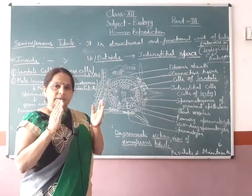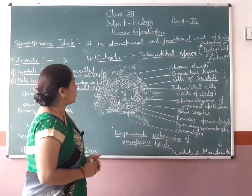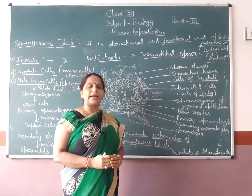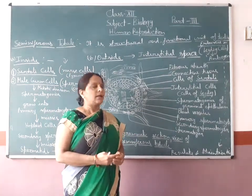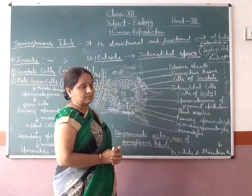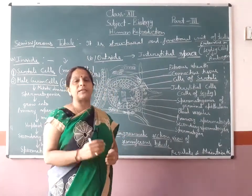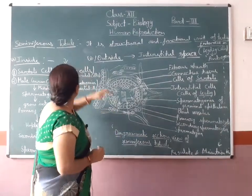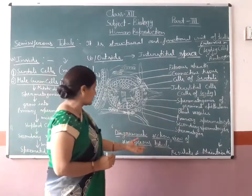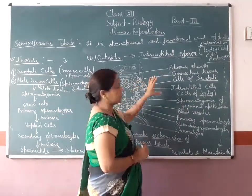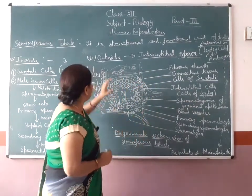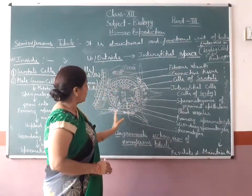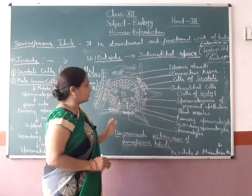It means the testis is made up of seminiferous tubules. It is highly coiled and convoluted and it produces spermatozoa by the process of spermatogenesis. The section view of this seminiferous tubule is given on this blackboard.